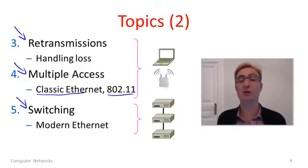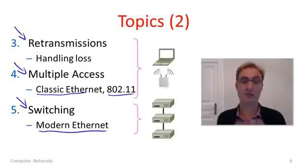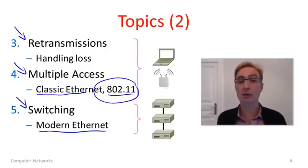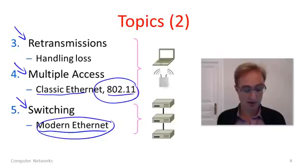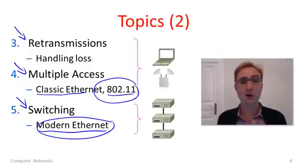In the third topic, to round out the link layer, I'll talk about something called switching. Switching allows us to use boxes called switches to combine individual links together into something that really looks like a much larger network link that connects a host to all of the other hosts on the switched network. It's used to build something called modern Ethernet. By the time we've seen all of these units, we'll know quite a lot about how to build networks — for instance, a lot about how 802.11 networks work, and also a lot about how modern switched Ethernet works. These are the garden variety wired networks that you find if you go to any enterprise or campus. So let's get on with it.